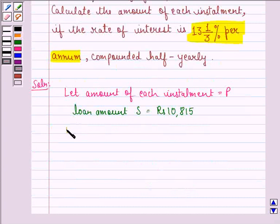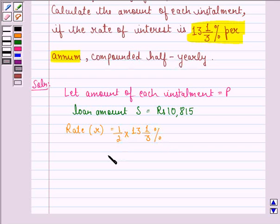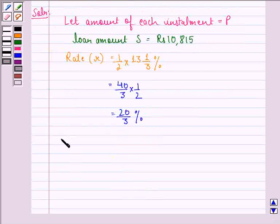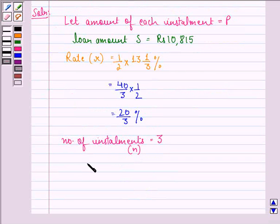Now rate of interest, small r, is equal to half of 13 1/3 percent because it is given to us that it is compounded half-yearly. This will be equal to 40/3 times 1/2, that is equal to 20/3 percent. Number of installments is equal to 3 and we denote it by small n.